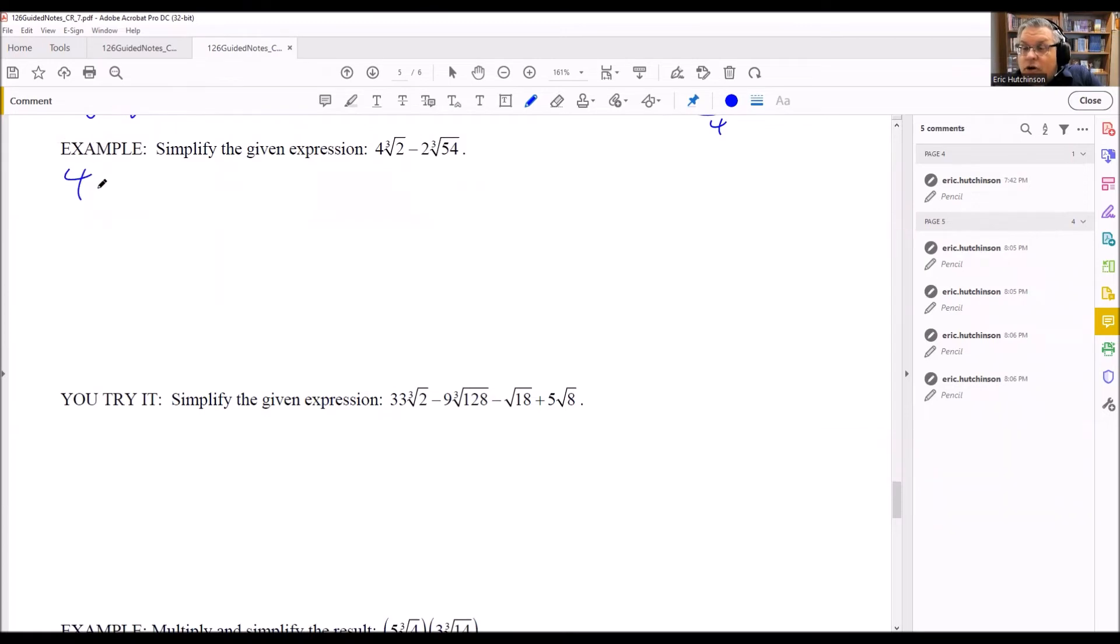This is 4 cube root of 2. And then I have 54. This time both of these are cube roots. So when I break this number down, I want to find the largest cube root possible. Cube root means I'm looking for an 8 or a 27, something like that, or a 64. Those are perfect cubes I want to look for. If you take 54 and divide that by 2, you'll get 27. And 27 just so happens to be a perfect cube. So now we know how this will break down inside. We'll do 27 times 2.